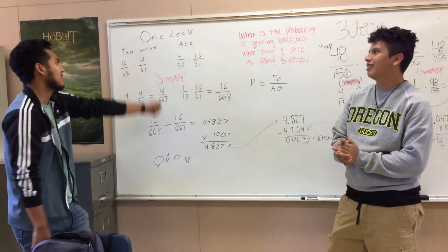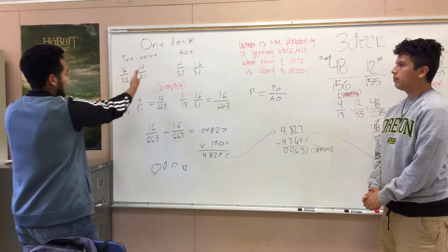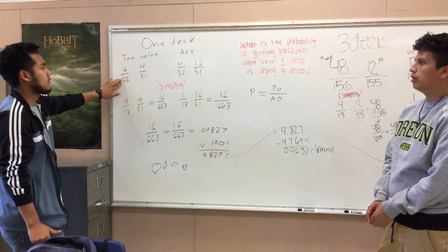So the math behind getting Blackjack in one deck: there's two ways you can get it - the 10-value card followed by an ace, or an ace followed by a 10-value card. We'll start with a 10-value card. There's 16 ten-value cards because there's four suits: diamonds, hearts, spades, and clubs. So that's 16 over 52 cards in one deck.